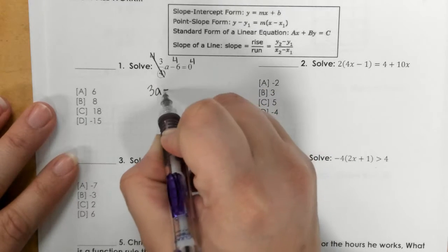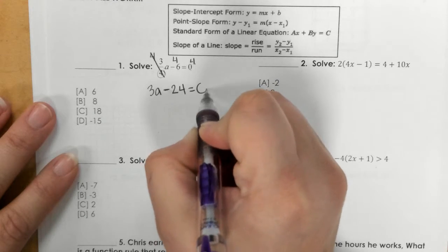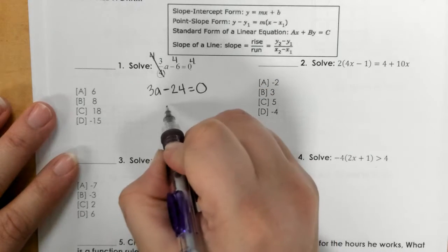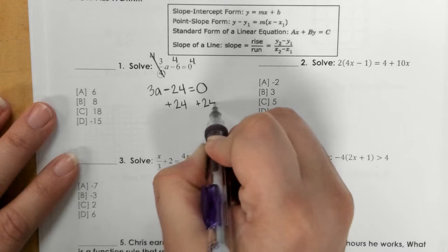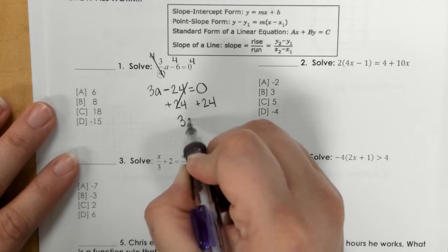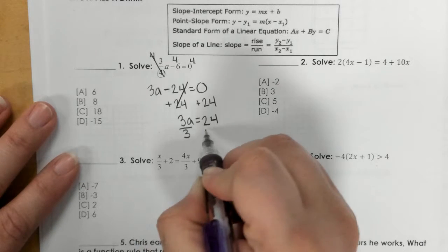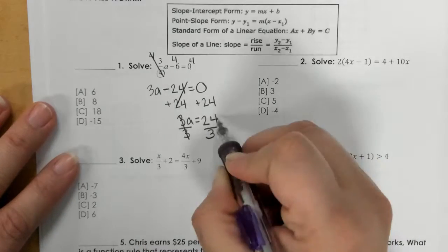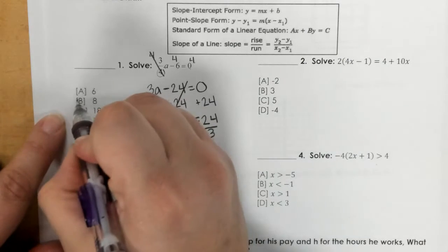The four is here, they cancel out leaving you 3a. Then we have 4 times negative 6 which is negative 24, and then 0 times 4 which is 0. This is a two-step equation so I add 24 to both sides and I get 3a equals 24.